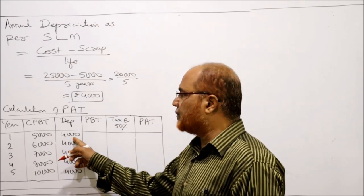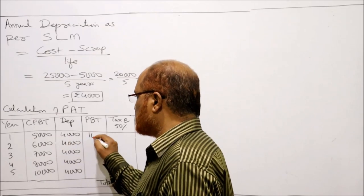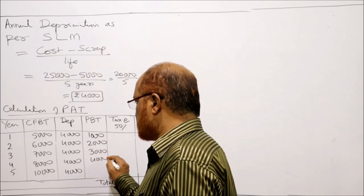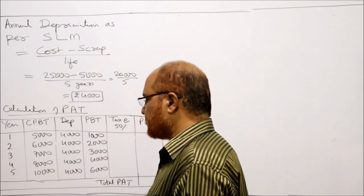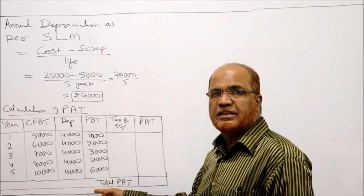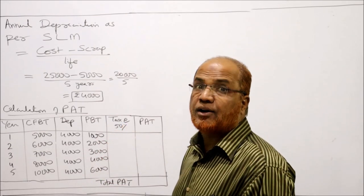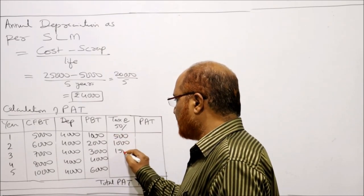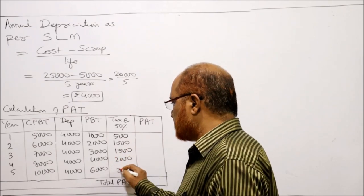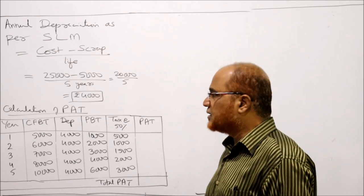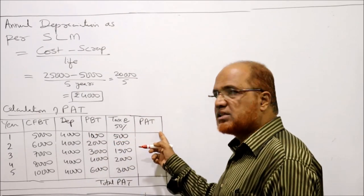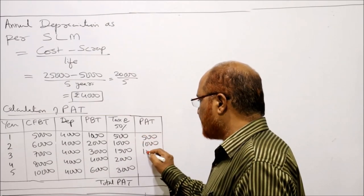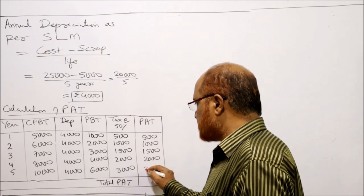Subtracting depreciation from CFBT to get PBT: 5,000 − 4,000 = 1,000; 6,000 − 4,000 = 2,000; 7,000 − 4,000 = 3,000; 8,000 − 4,000 = 4,000; 10,000 − 4,000 = 6,000. Applying 50% tax: 500; 1,000; 1,500; 2,000; 3,000. Subtracting tax from PBT gives PAT: 500; 1,000; 1,500; 2,000; and 3,000.